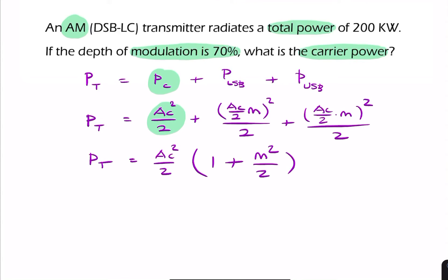Now we can simply substitute our total power of 200, so 200 kilowatts equals the carrier power times 1 plus 0.7 squared over 2. So the carrier power, if you rearrange that and calculate it, will be 161 kilowatts. So that's our final answer.